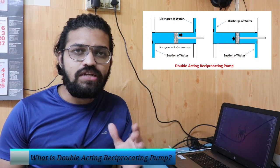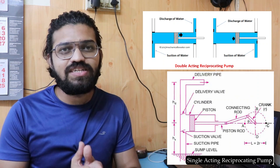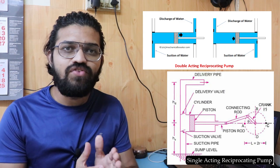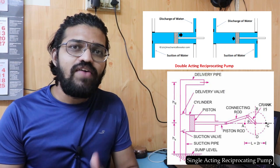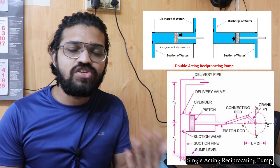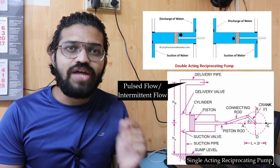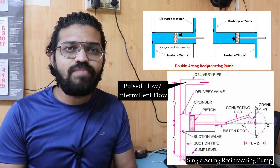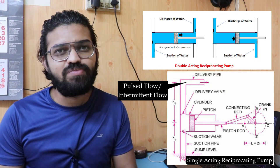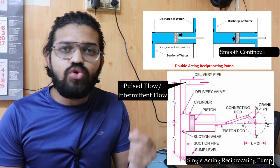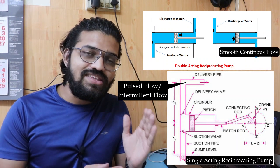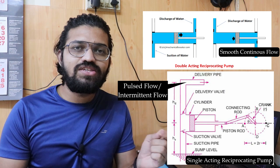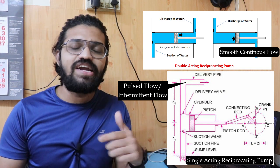In our previous video we saw the single acting reciprocating pump. The main problem with the single acting reciprocating pump is that at the discharge side we are not getting a continuous discharge — we get output in a pulsed, intermittent flow. In the double acting reciprocating pump that problem has been resolved; the frequency of that intermittent flow is reduced.